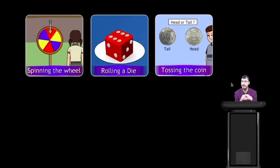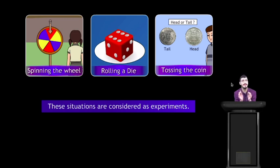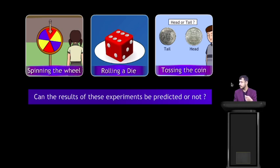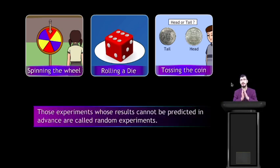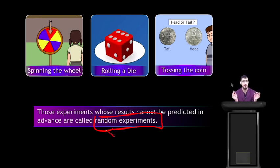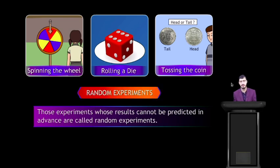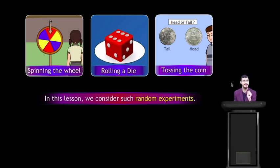In all three situations — spinning the wheel, rolling a die, or tossing the coin — these situations are considered as experiments. Can the result of these experiments be predicted or not? Of course not, we cannot predict. So those experiments whose results cannot be predicted in advance are called random experiments. Remember always: random experiments means we cannot predict the results in advance.